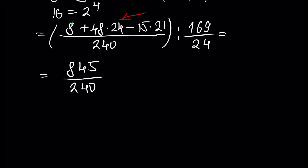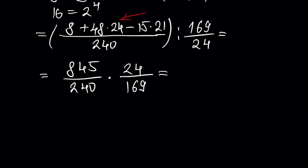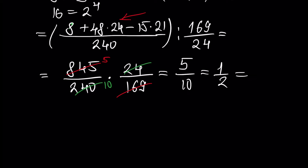We can transform our division to multiplication. We multiply both sides by 24, leaving us with 10 here. And we divide both sides by 169, which gives us 5. All in all, we have 5 over 10, which is 1 over 2. This is our B.